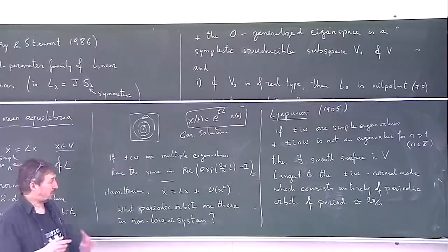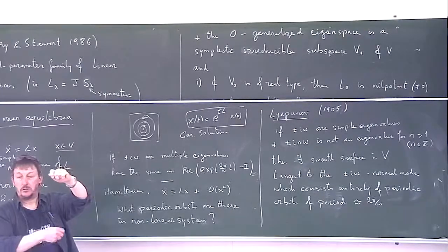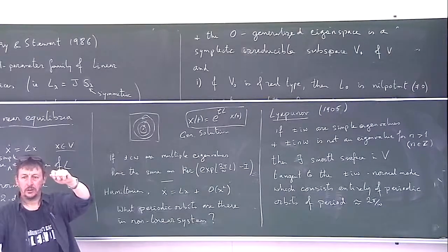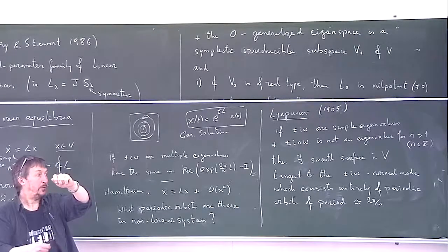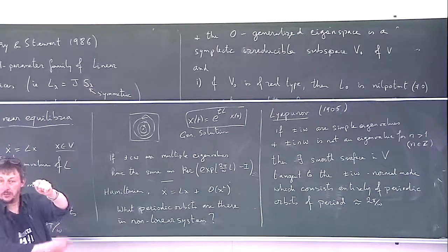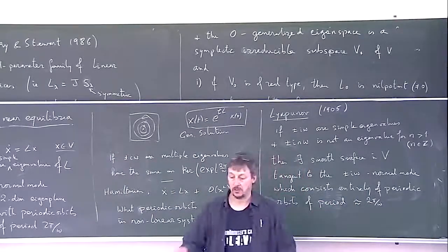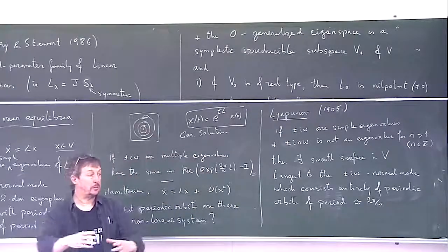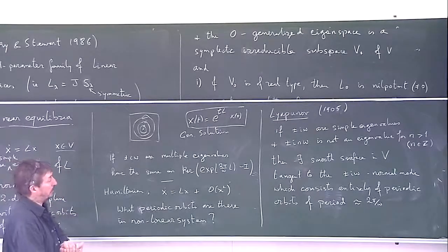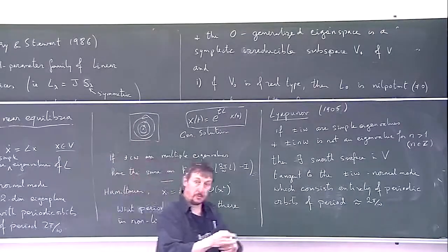Of period close to 2 pi over omega. It's not going to be constant. Imagine a pendulum, so we know the period of a pendulum is 2 pi square root of L over G. Or G over L. But that's approximate. It actually depends on the amplitude, so for small oscillations it's very accurate. And that's the idea here.